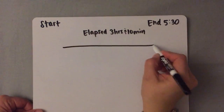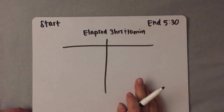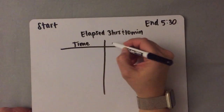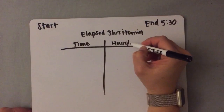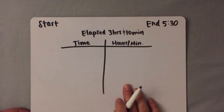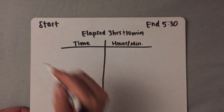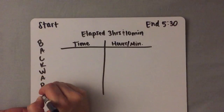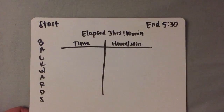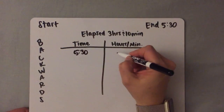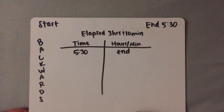You set up your t-chart the same way you do for elapsed time and end time, with time over here, and hours and minutes over here. However, you need to remember that you are counting backwards — you are subtracting. So instead of having a start time here, you are going to have an end time, and that is 5:30. Write 'end' next to it on this side.